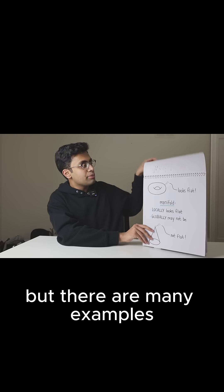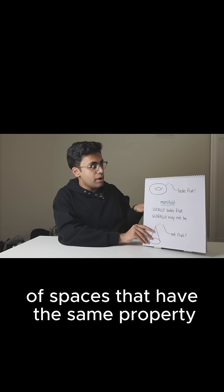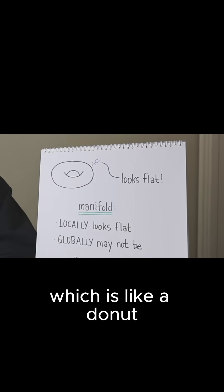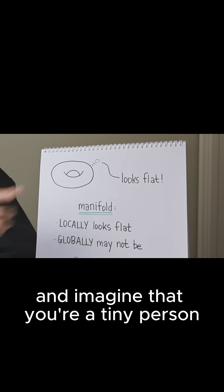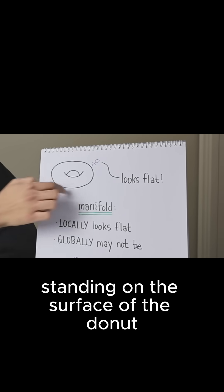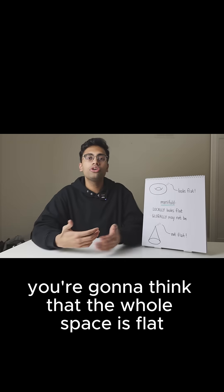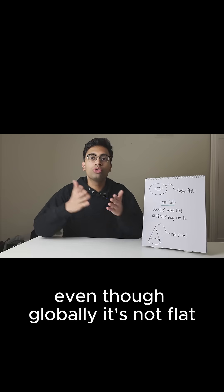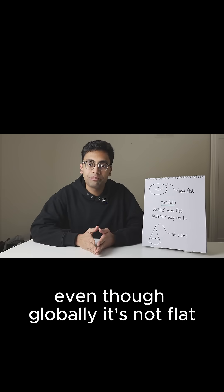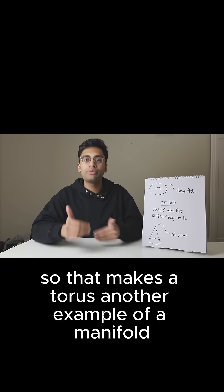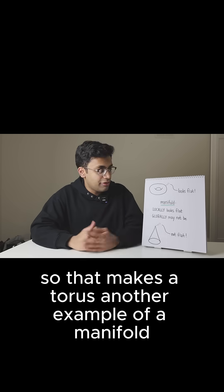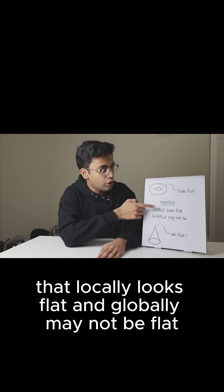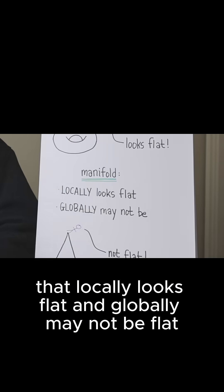There are many examples of spaces that have the same property. For example, if you look at a torus, which is like a donut but with the insides not filled in, and imagine that you're a tiny person standing on the surface of the donut. Once again, you're going to think that the whole space is flat, even though globally it's not flat. So that makes a torus another example of a manifold. So a manifold is any space, roughly speaking, that locally looks flat and globally may not be flat.